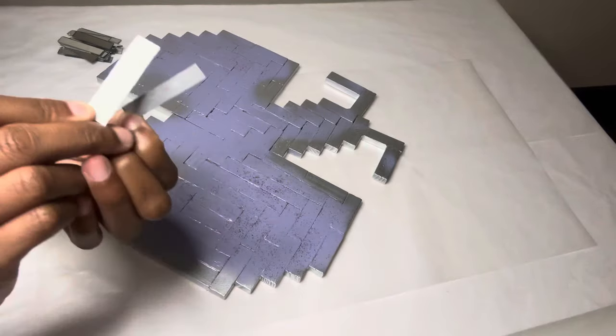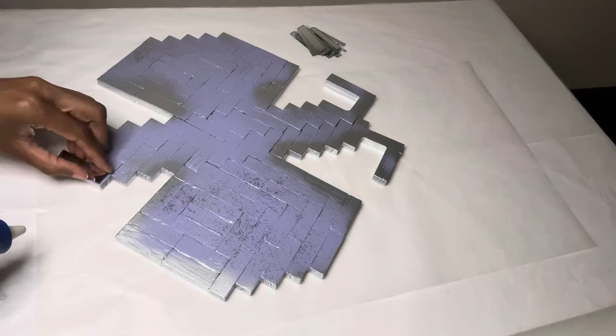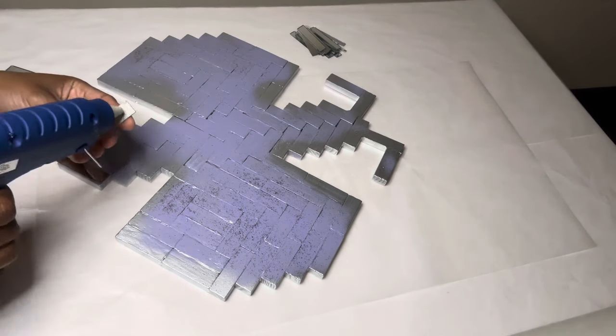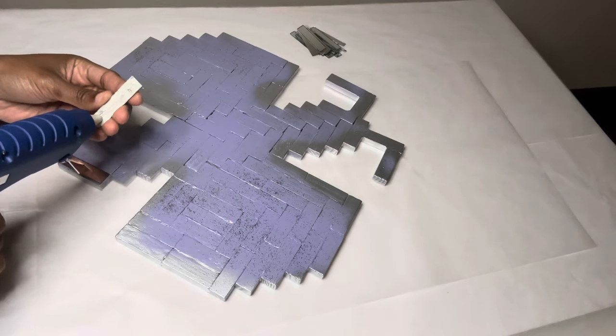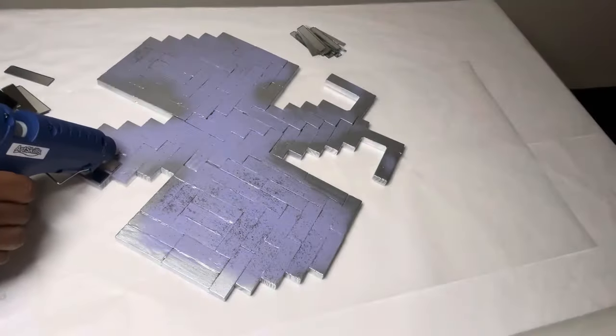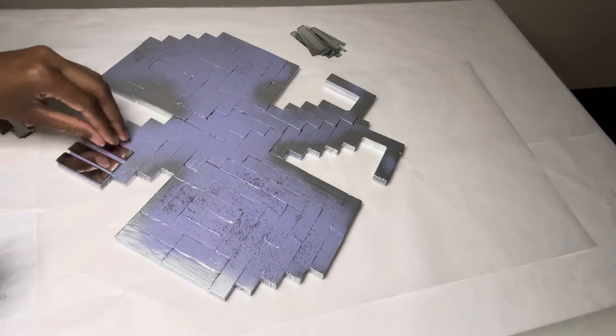To decorate, I'm using two different size rectangular mirror tiles that I purchased from Amazon, and I'm just gluing these only in the center. These are self-adhesive, but since I continuously reuse these, I need to add a little hot glue so they can stick better.